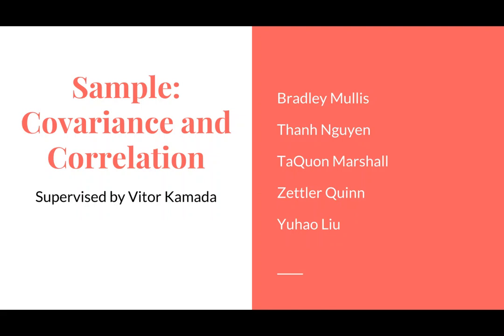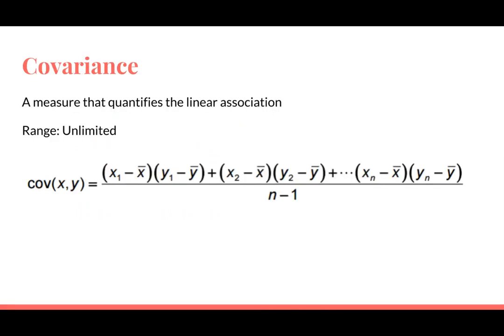In this video, we'll be talking about the relationship between covariance and correlation. Covariance is a measure that quantifies linear association, and its range is potentially unlimited.